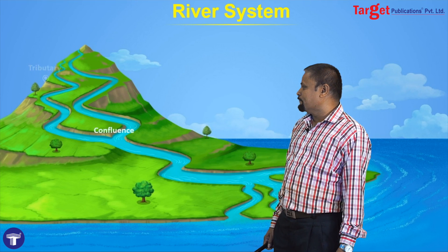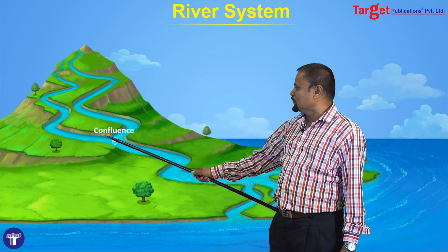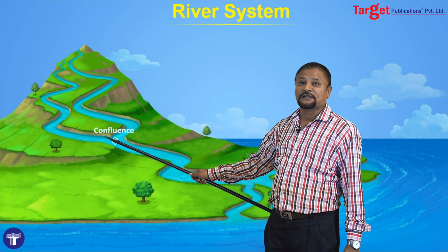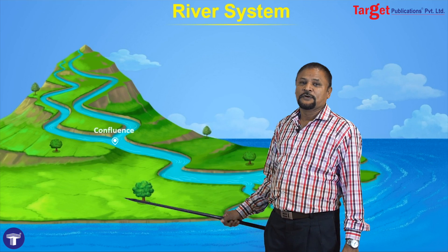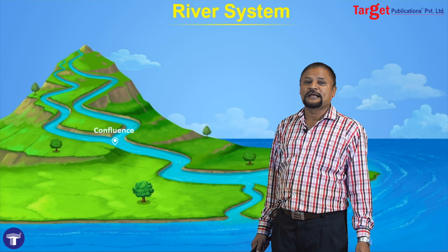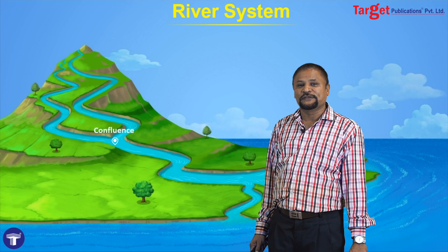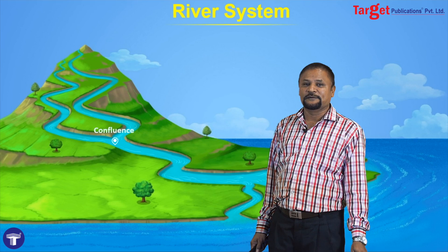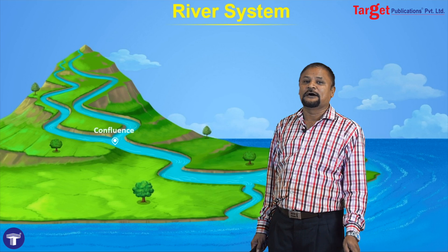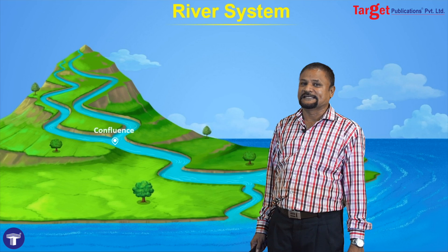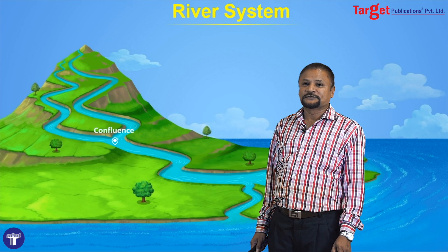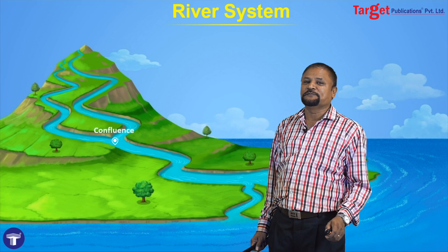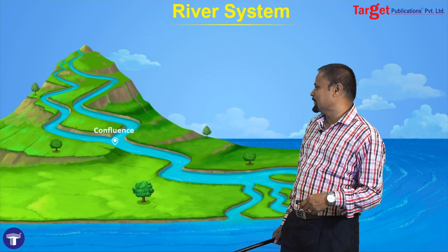The meeting point of two rivers is called confluence. For example, at the confluence of river Ganga and Yamuna, the Allahabad city is there. So, confluence means the meeting point of two rivers.